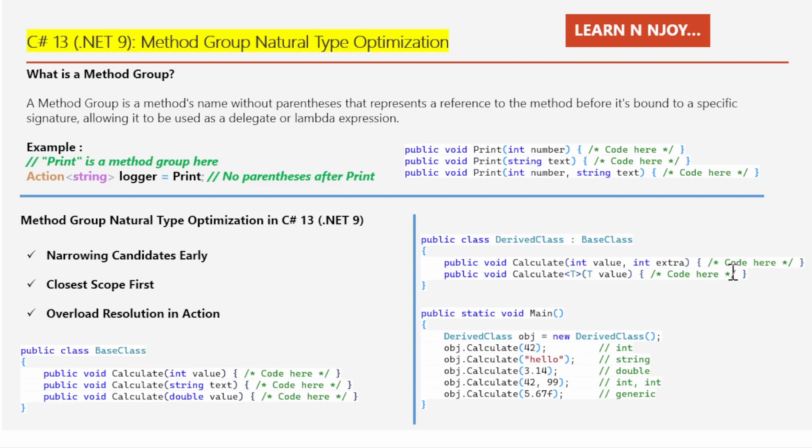So that brings me to the end of my session today. To sum up, this method group natural type optimization in C# 13 is a pretty big win, especially if you're managing a large codebase or working with complex inheritance structures. This is not a change you will see directly in your code as a developer, but it's very important. You will definitely feel it over time, especially as your projects grow.